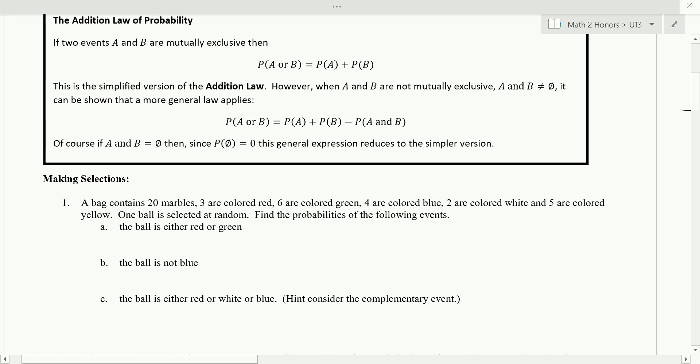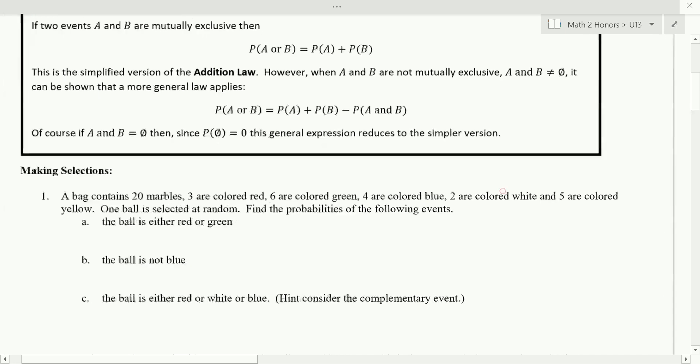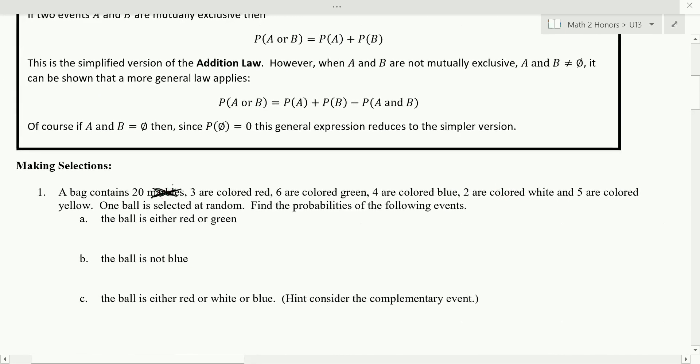A bag contains 20 marbles... and then I need to correct something on here. Let's say 20 balls because you'll see why. Three are colored red, six are colored green, four are blue, two are white, and five yellow. One ball is selected at random. Find the probabilities of the following events. Let's just do part A right now. If I want to find the probability that the ball is either red or green, what would be natural for you to do? Or what would be the answer? What over what? Nine over 20? Okay, how'd you get nine? Red, so there are three red and there's six green, so you're done, right?